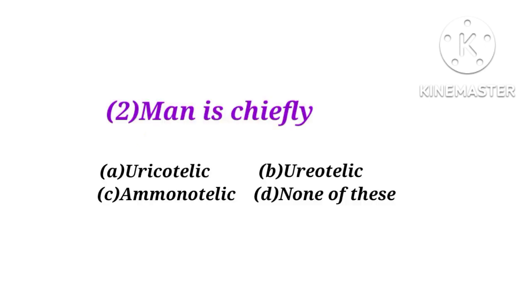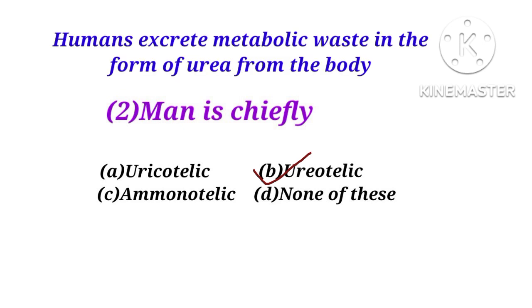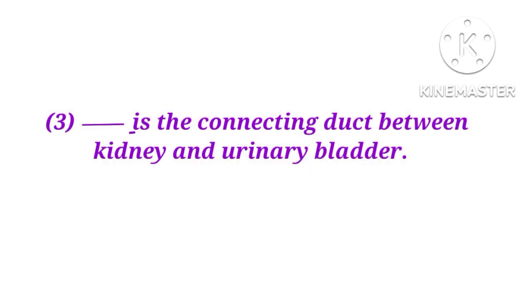Question number 2. Man is chiefly uricotelic, ureotelic, ammonotelic, or none of these? The answer is B. Man is chiefly a ureotelic organism because humans excrete metabolic waste in the form of urea from the body. That's why man is called a ureotelic organism.